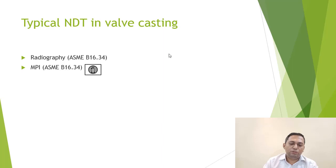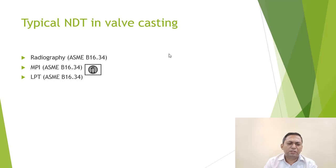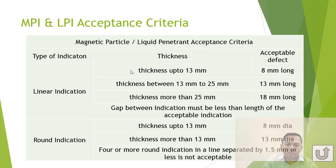MPI (magnetic particle test) and LPI/LPT (liquid penetrant test) details are also given as per B16.34, in Annex 2 and Annex 3. The acceptance criteria cover linear indications and round indications for different thicknesses — if within the specified range, the casting is acceptable and can proceed to the next level.